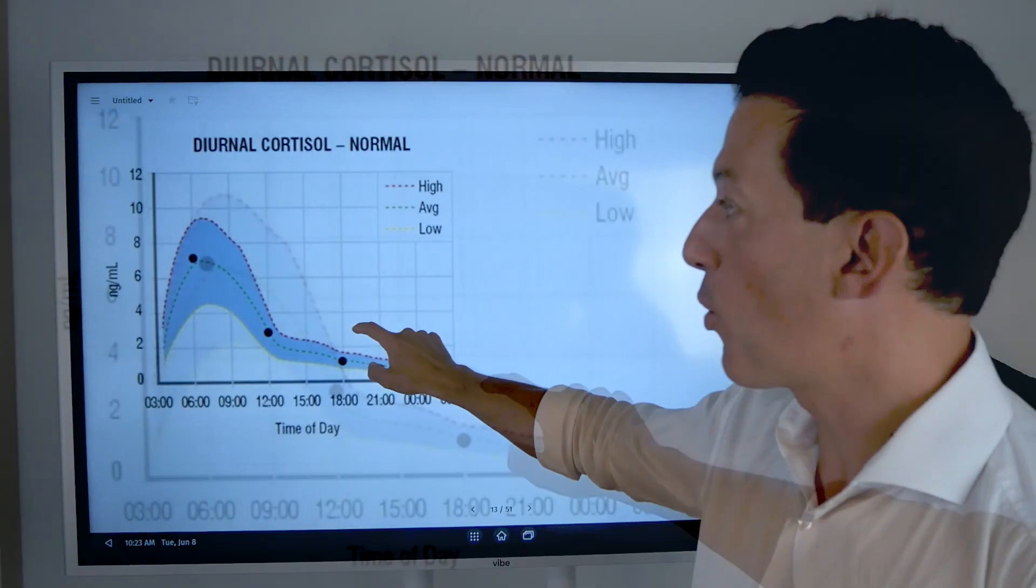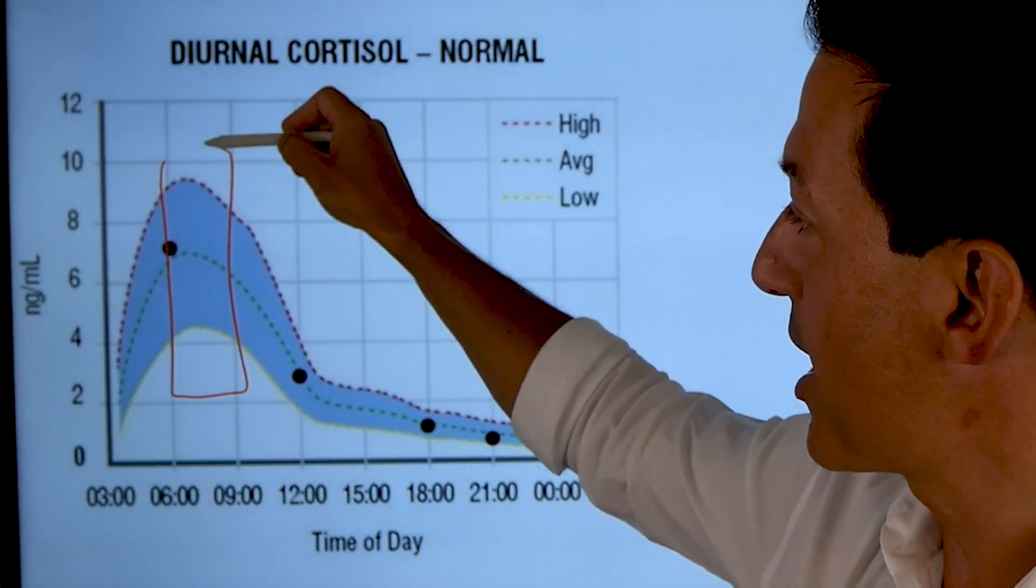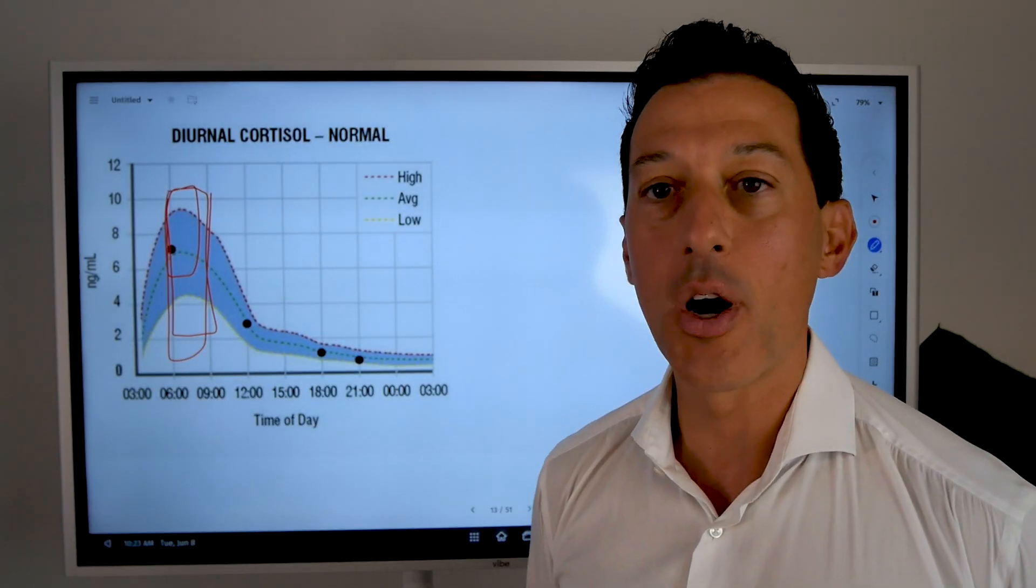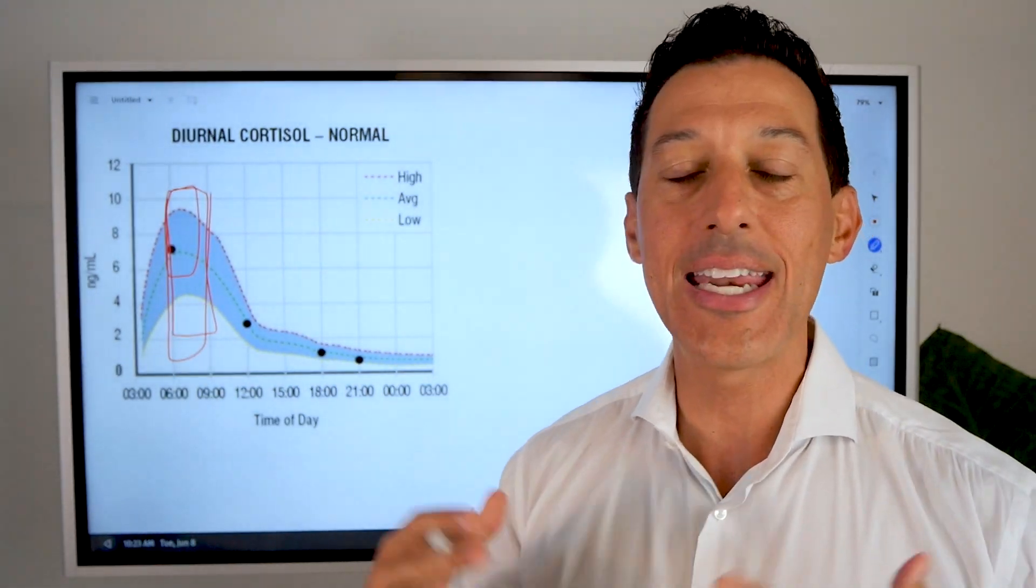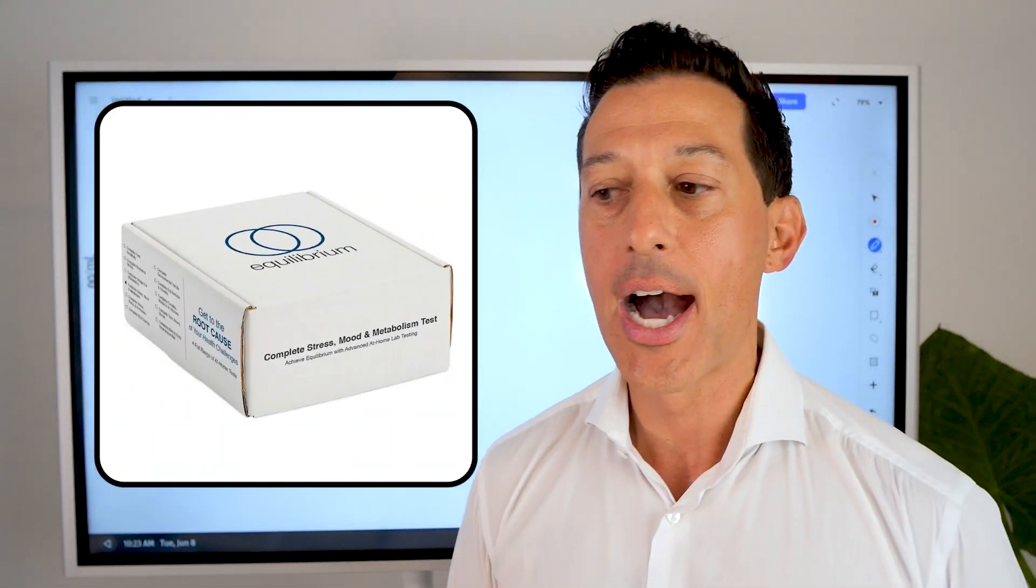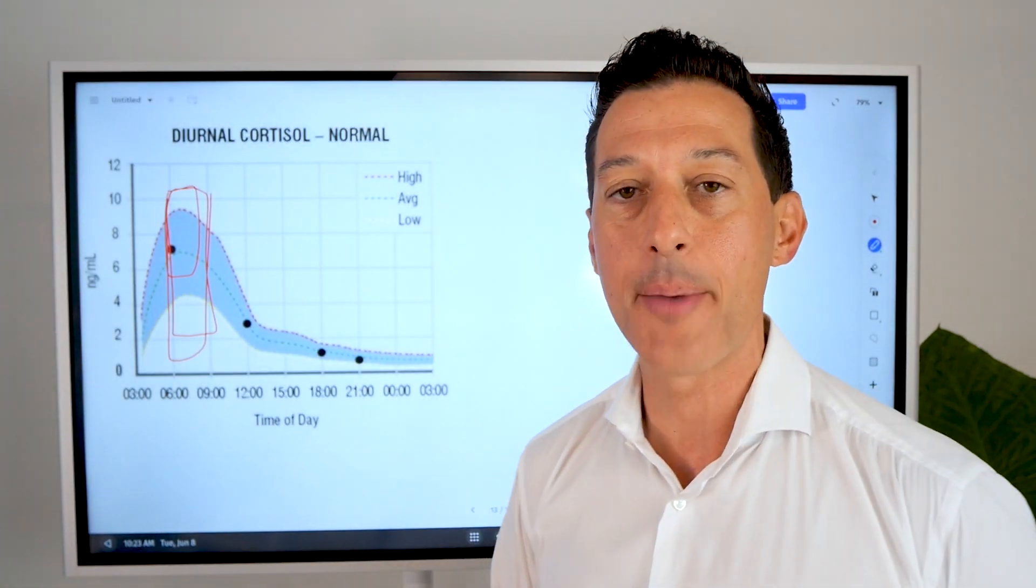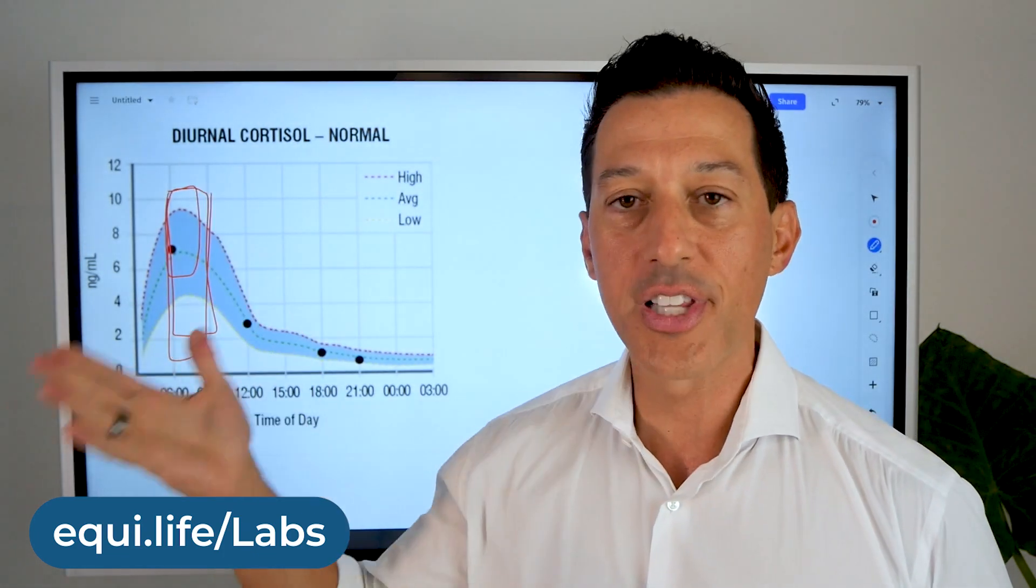On a hormone-based lab, you can see between six and nine right here is the highest spike in cortisol. And that's exactly where you want to be. You want to be elevated. This is a saliva hormone test. Anybody can run this lab right at home. You can always find these labs at equid.life forward slash labs.